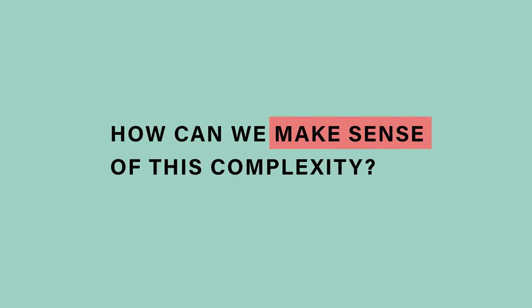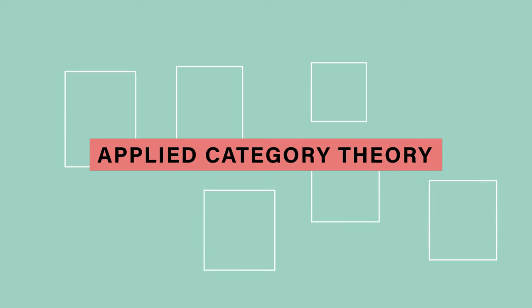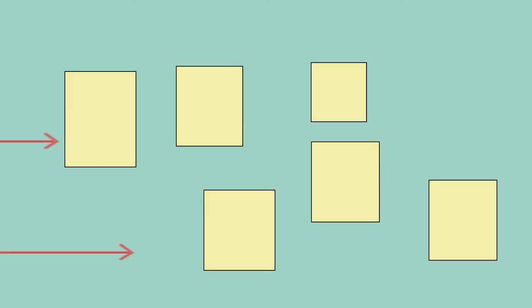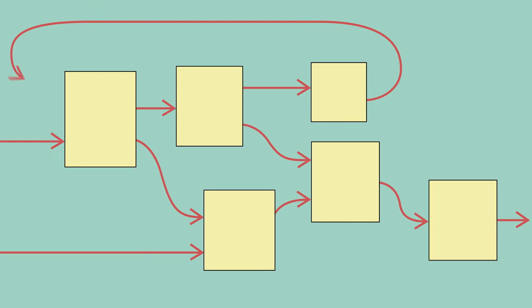There is a tool that can help: applied category theory. Category theory is a branch of mathematics perfectly suited for the problems engineers face in the 21st century. It formalizes abstract ideas about relationships between things and various ways of composing them together.